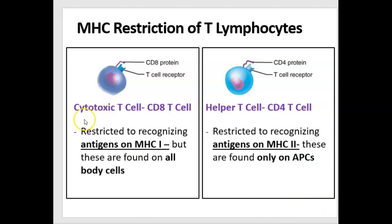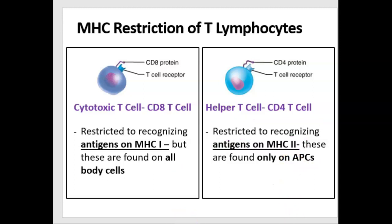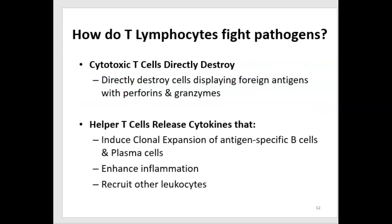Cytotoxic T cells can kill any body cell, but then they're done — they kill that one cell and they're done. But helper T cells have such a long-lasting effect: they're activated, recognize this antigen on APCs only, and then produce a widespread effect. It's beneficial that MHC2s are limited to one kind of cell to avoid a full-mounted immune response when only a couple of your cells are infected — it's all about the likelihood of encountering an antigen on an antigen-presenting cell.